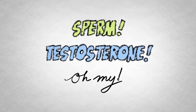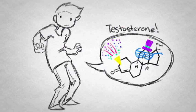Tip 3. Sperm. Testosterone. Oh my! These are the hormones of our lives. And they are exactly what your body starts to produce when puberty kicks off.